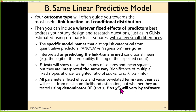We're still going to have significance tests that use things like T's and F's, but we're not going to find them using sums of squares. Sums of squares is gone — it's all about likelihood at this point. All of the parameters and their standard errors will result from the maximum likelihood process. Whether or not we end up using degrees of freedom is going to vary by software.